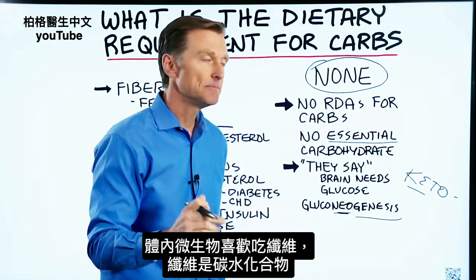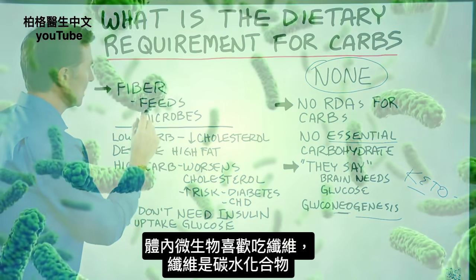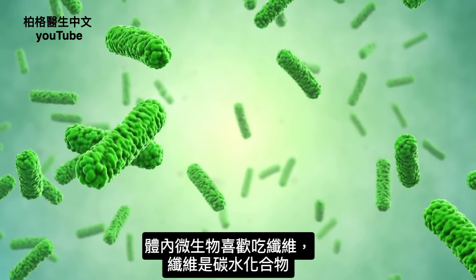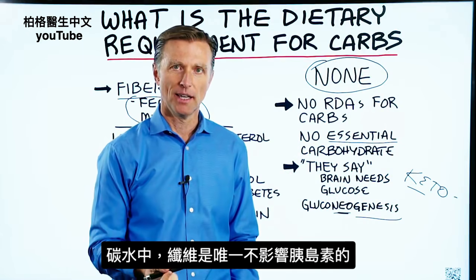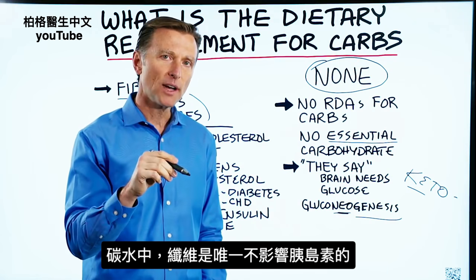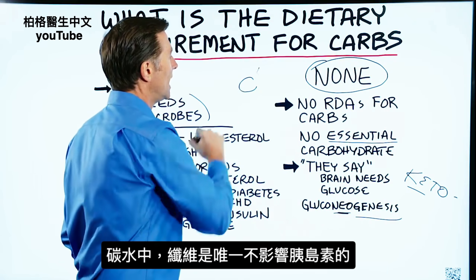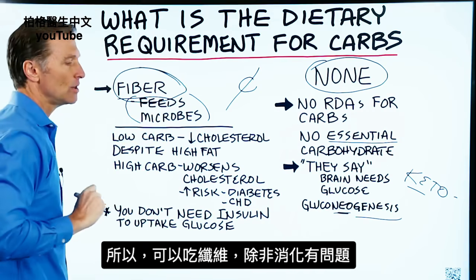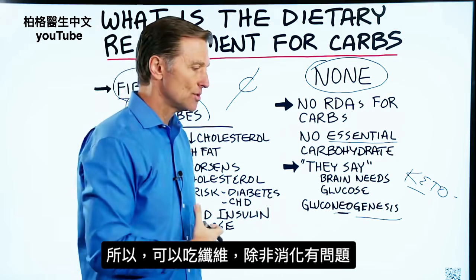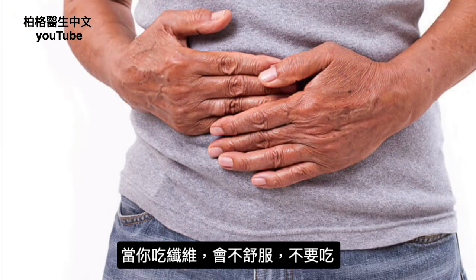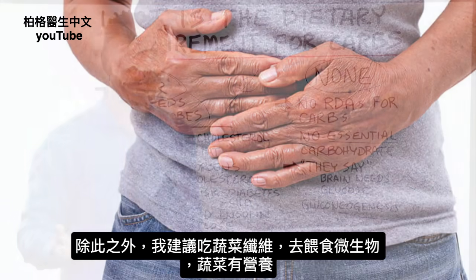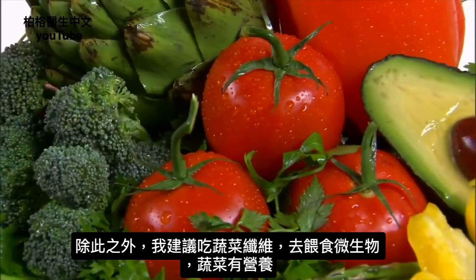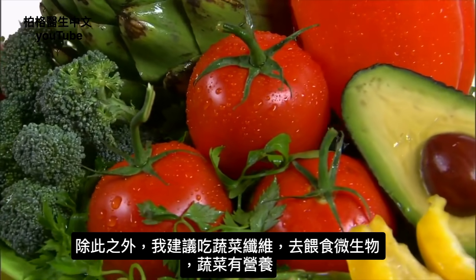That being said, your microbes do like to eat fiber, and fiber is a carbohydrate. But it is the only carbohydrate that has zero effect on insulin. So fiber is okay, unless you have a lot of digestive issues where consuming fiber just tears you up. Other than that, I would recommend vegetables to get your fiber to feed the microbes, and the vegetables have some nutrients as well.